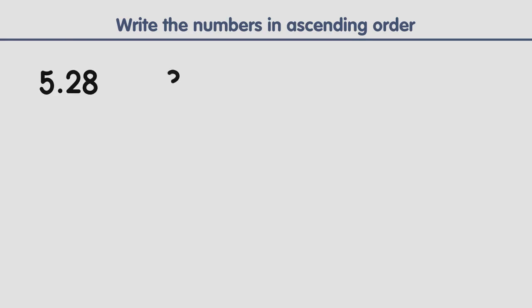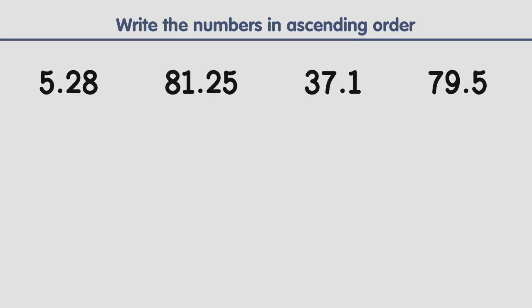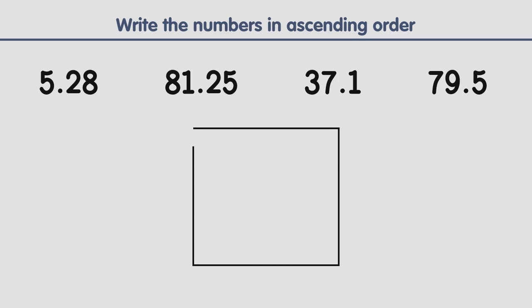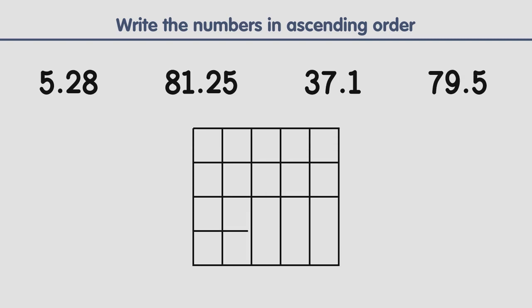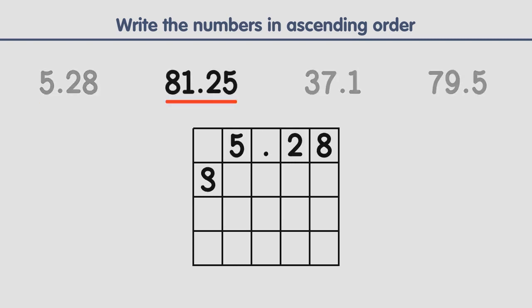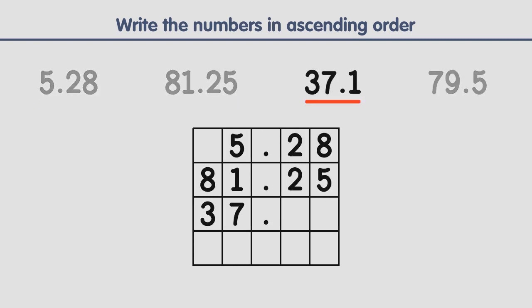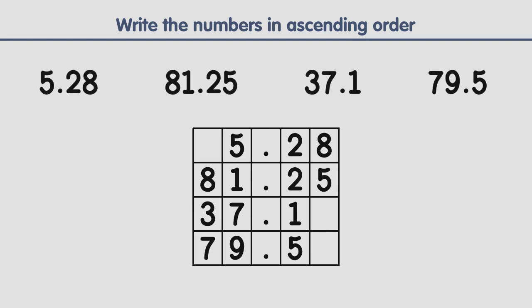Write the following numbers in ascending order. Ascending order means writing the numbers from lowest to highest. The first step is to create a table and put each number on it. As we can see, the decimal point is in the same place for each number.